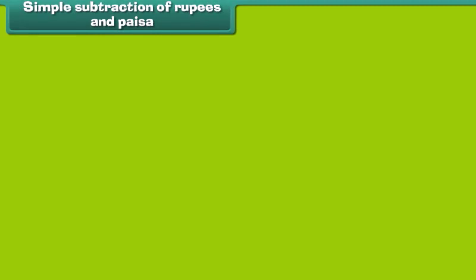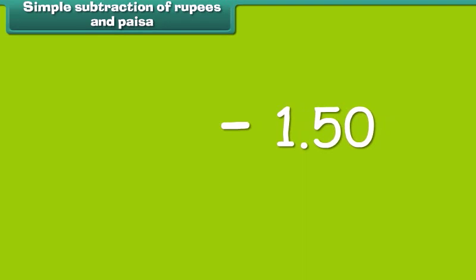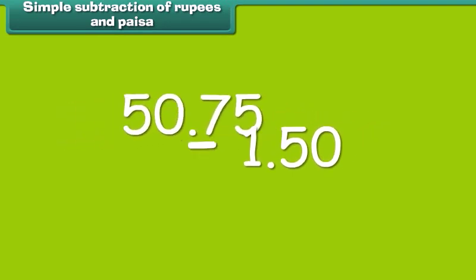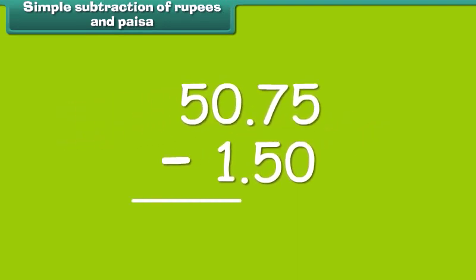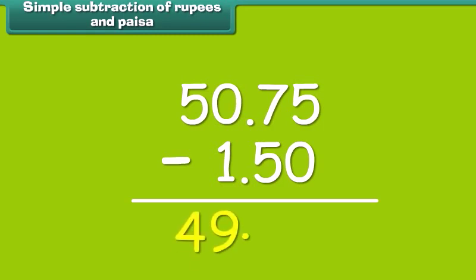Subtraction of rupees and paisa is simple. Subtract 1 rupee 50 paisa from 50 rupees 75 paisa. We first subtract numbers in the paisa column and then in the rupee column. So, the answer is 49 rupees and 25 paisa.